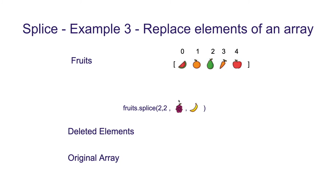In example 3, we are going to use splice to replace elements of an array. We have the array with 5 fruits and we use splice with parameters 2, 2, and 2 replacement fruits. This means we want to delete 2 elements starting from index 2 — that is, we want to delete pear and carrot — and replace them with grapes and banana. This leads to the deleted array containing pear and carrot, and the original array is updated accordingly.